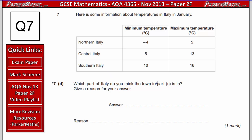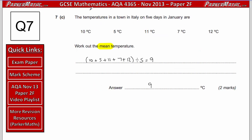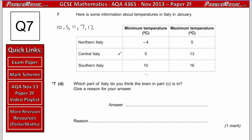Part D asks which part of Italy the town in part C is in, and to give a reason. From part C, the smallest temperature is 5 and the largest is 12. The minimum closest to 5 and maximum closest to 12 in the table match Central Italy. Also, the mean of 9 degrees C falls between 5 and 13 — within Central Italy's range — but not within Northern or Southern Italy's ranges. So the answer is Central Italy, because all the temperatures are between 5 and 13.